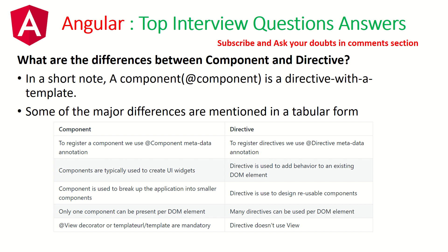To register a component we use the @Component metadata; a directive uses the @Directive decorator. Components are typically used to create UI widgets; directives are used to create behavior or functionality. Components break up the application into smaller parts; directives are used to design reusable features. Only one component can be present per DOM element, whereas many directives can be used per DOM element. A template or templateUrl is mandatory for a component; directives don't have a template.